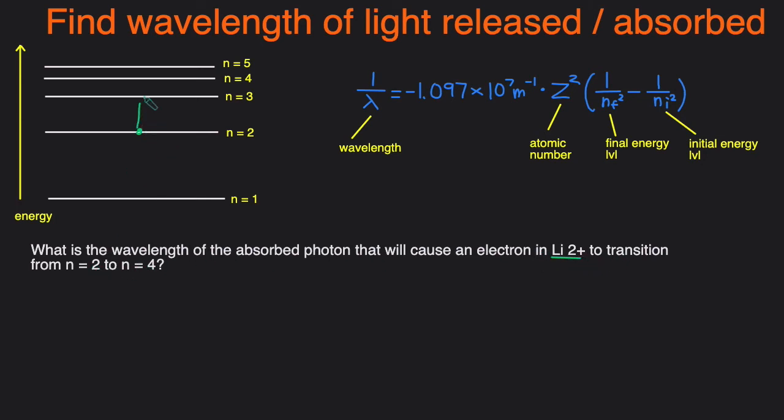So this time we're going from lower to higher, that means light is going to be absorbed, and to solve for the wavelength of the light we're once again going to use Rydberg's equation.